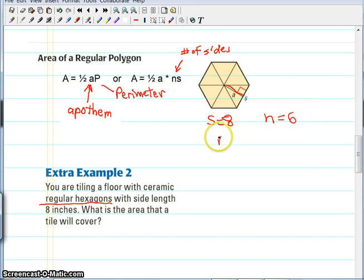So perimeter is going to equal side length, eight, times six sides. Forty-eight inches.